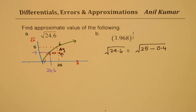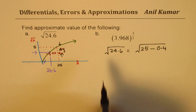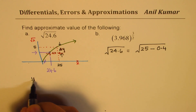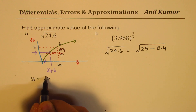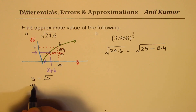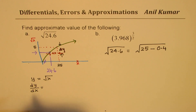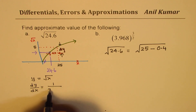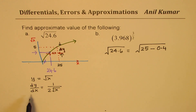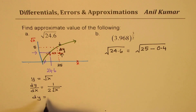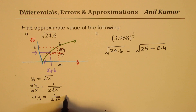Here is differentials, which will give you a fairly accurate answer. So what we are working with is a function, which is y equals the square root of x. Now, what is dy/dx? If I differentiate this function with respect to x, I get 1 over 2 square root of x. Now, dy/dx can be approximated as: the change dy is basically 1 over 2 square root of x times dx.